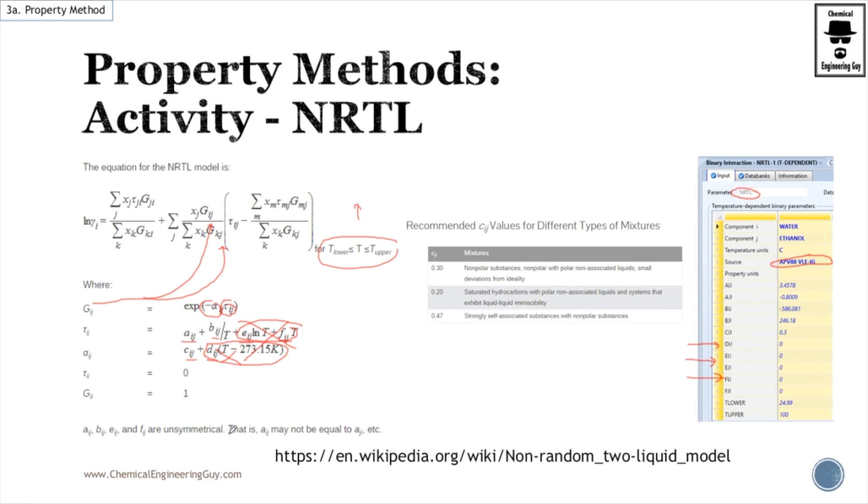And very important once again, I'm pretty sure you know it already, but the coefficients are unsymmetrical. Meaning that A I,J is not the same as A J,I.